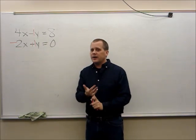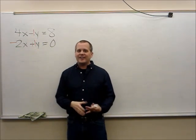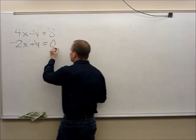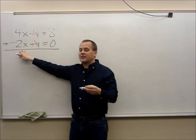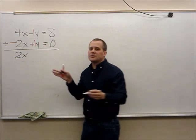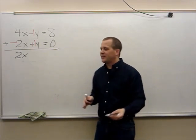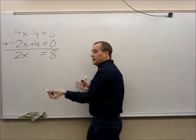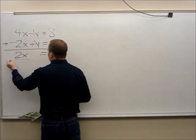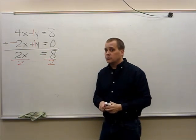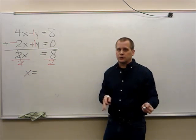Now I ask myself: are the numbers in front of y the same? Yes. Is one of them positive and one of them negative? Yes. Now all I have to do is add all of this up. What's 4x minus 2x? 4x minus 2x is just 2x. What happens to those y's? One positive y and one negative y — they're going to eliminate, they get rid of one another. What's 8 plus 0? 8. The number in front of x is 2, so I'm going to divide both sides by 2. 2 divided by 2 is 1 — x is equal to 8 divided by 2, which is 4.